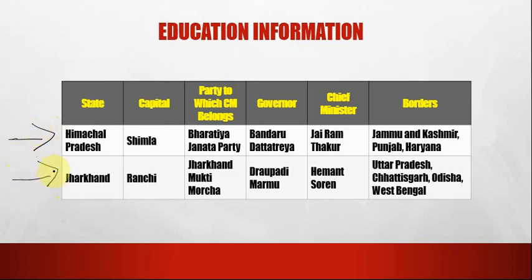The next state is Jharkhand. The capital of Jharkhand is Ranchi. The party to which the CM belongs is Jharkhand Mukti Morcha. The governor is Draupadi Murmu. The chief minister is Hemant Soren. The borders are Uttar Pradesh, Chhattisgarh, Odisha and West Bengal.